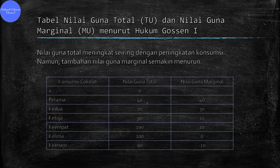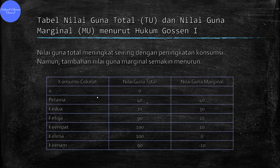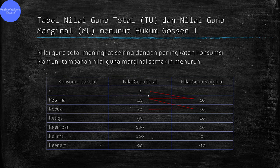Di situ ada tiga kolom. Kolom pertama yaitu konsumsi coklat. Kolom kedua tentang nilai guna total, dan kolom ketiga yaitu nilai guna marginal. Dari tabel tersebut, dapat kita lihat bahwa nilai guna total pada awalnya menaik namun selanjutnya menurun. Sedangkan nilai guna marginal terus mengalami penurunan. Pada batang coklat pertama, kepuasan total dan nilai guna total memakan coklat itu adalah 40. Nilai guna marginal atau kepuasan tambahannya pun sangat tinggi, yaitu 40 pada saat pertama.